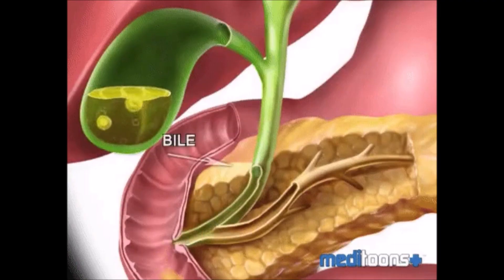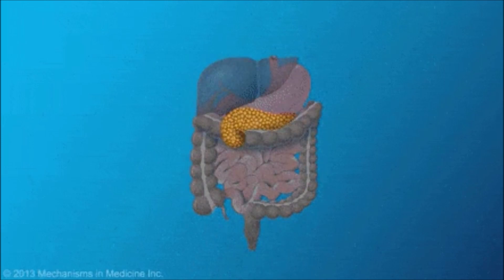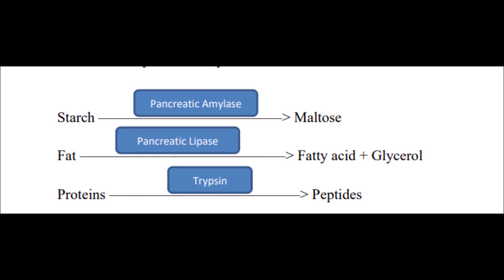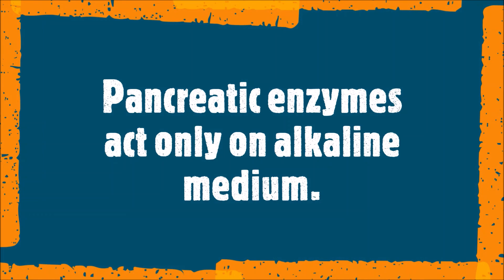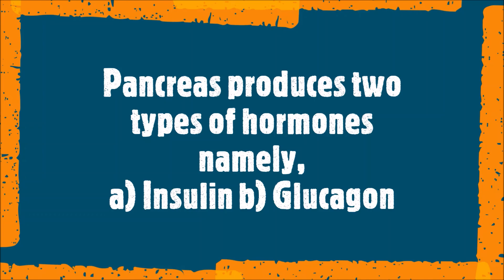The pancreas is the second largest gland in our body. It is a heterocrine gland, 12 to 15 cm in length, and lies below the stomach. It secretes a digestive fluid called pancreatic juice, which contains the digestive enzymes trypsin, nucleases, pancreatic lipase, and pancreatic amylase. Trypsin digests proteins, pancreatic amylase digests starch, and lipase breaks down emulsified fat into fatty acids and glycerol. Pancreatic enzymes act only in an alkaline medium. The pancreas also produces two hormones: insulin and glucagon, which will be discussed in the chapter on control and coordination.